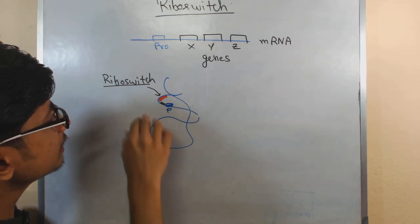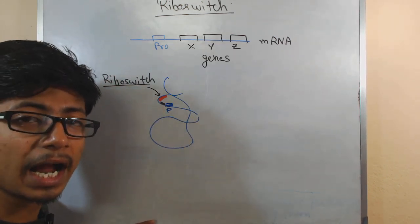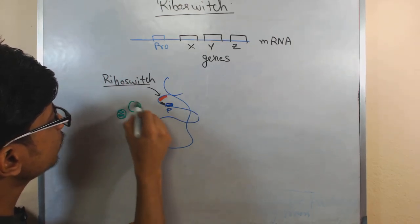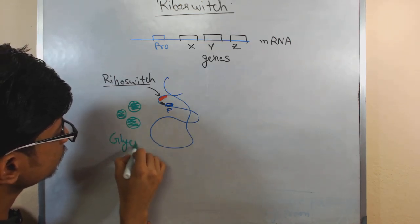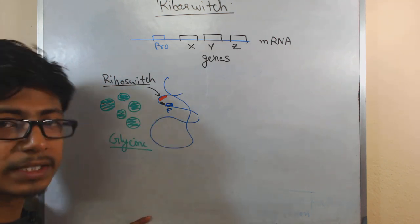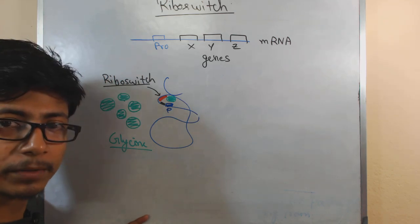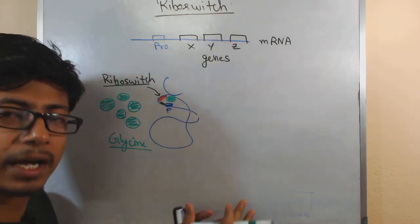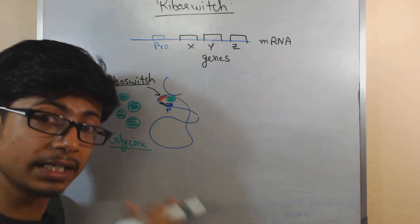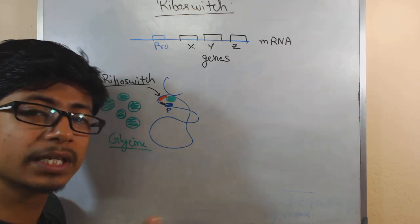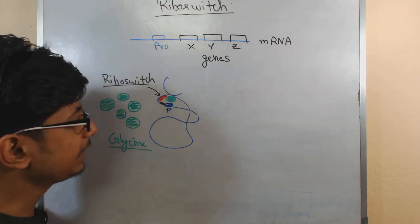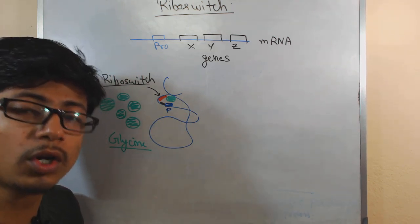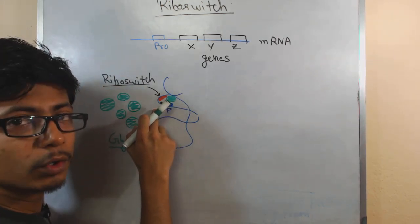This is called a riboswitch because it is found in mRNA and can also be found in rRNA. The riboswitch is a particular region where small metabolites can bind — for example, glycine. Remember, the riboswitch is not something extra; it is part of the RNA sequence. It has a very unique ability to interact with certain small molecules or metabolites, and in response it can change the structure of a certain region of the mRNA, resulting in the turning on or turning off of certain gene expression, since the promoter is in very close proximity.